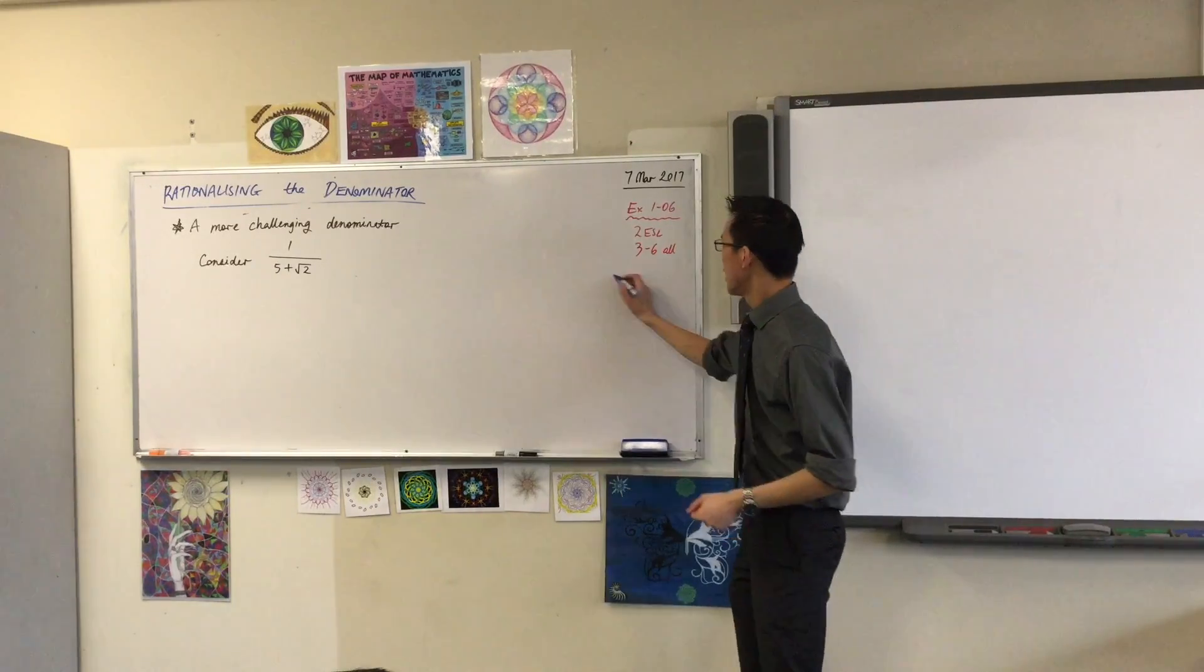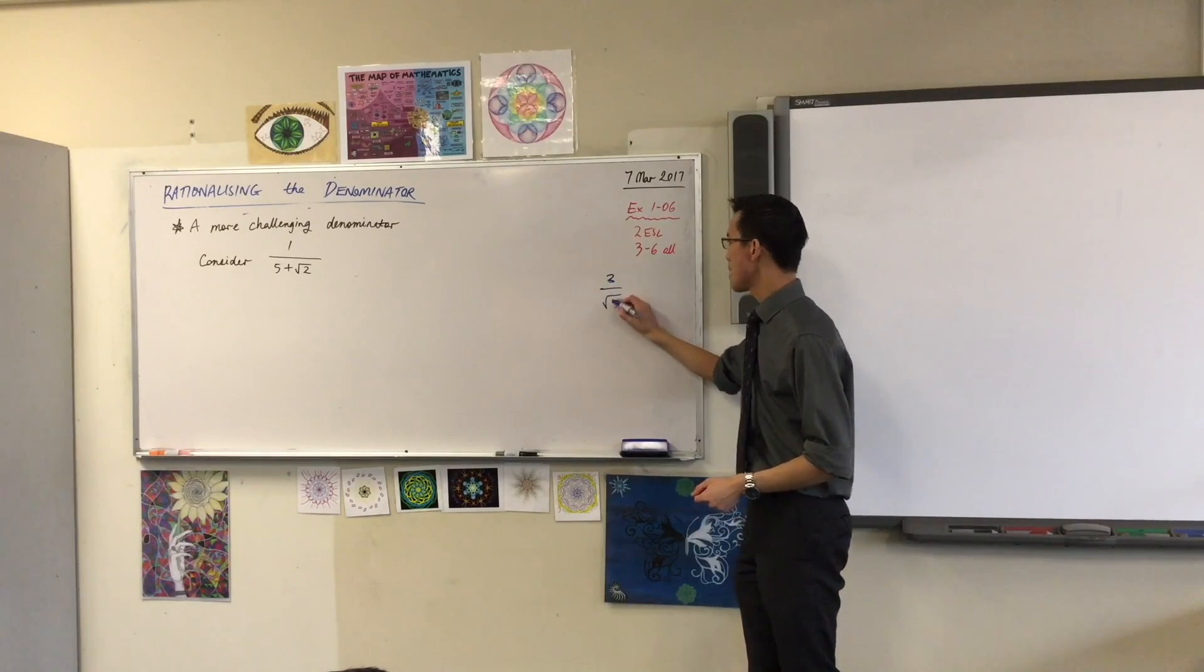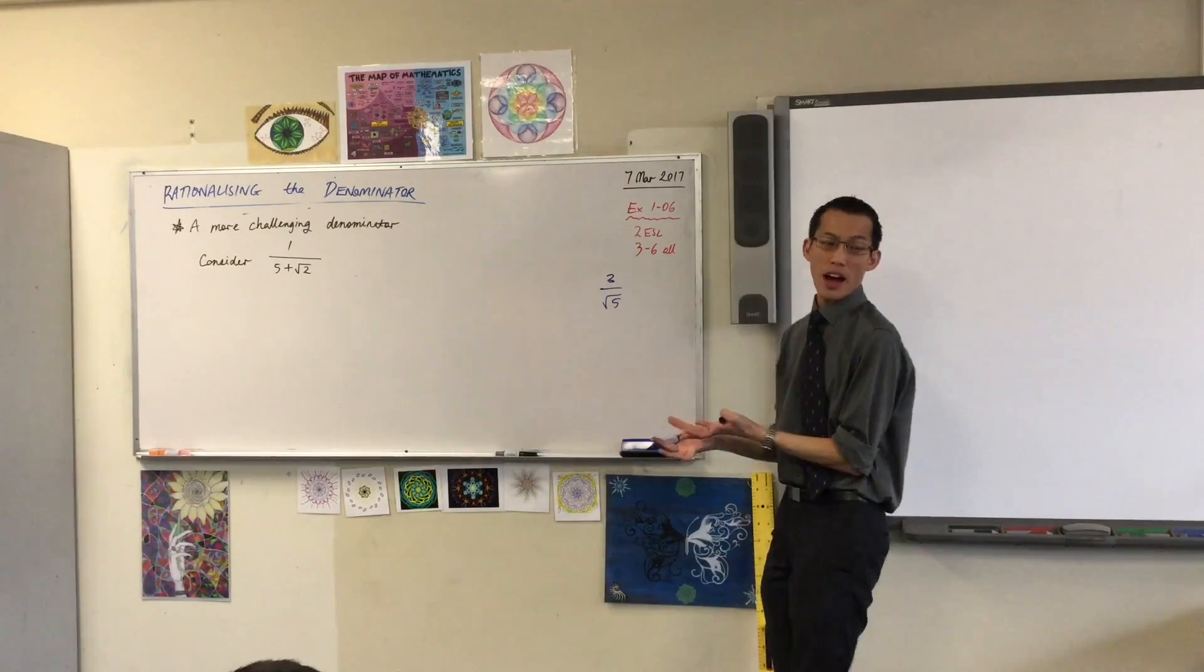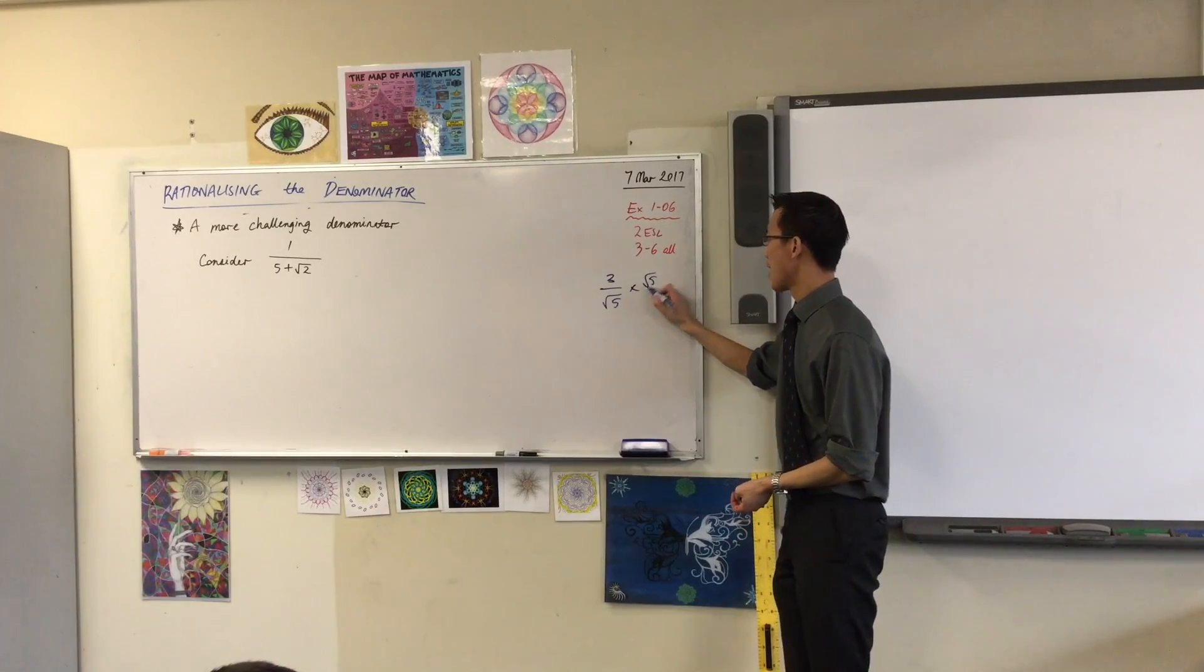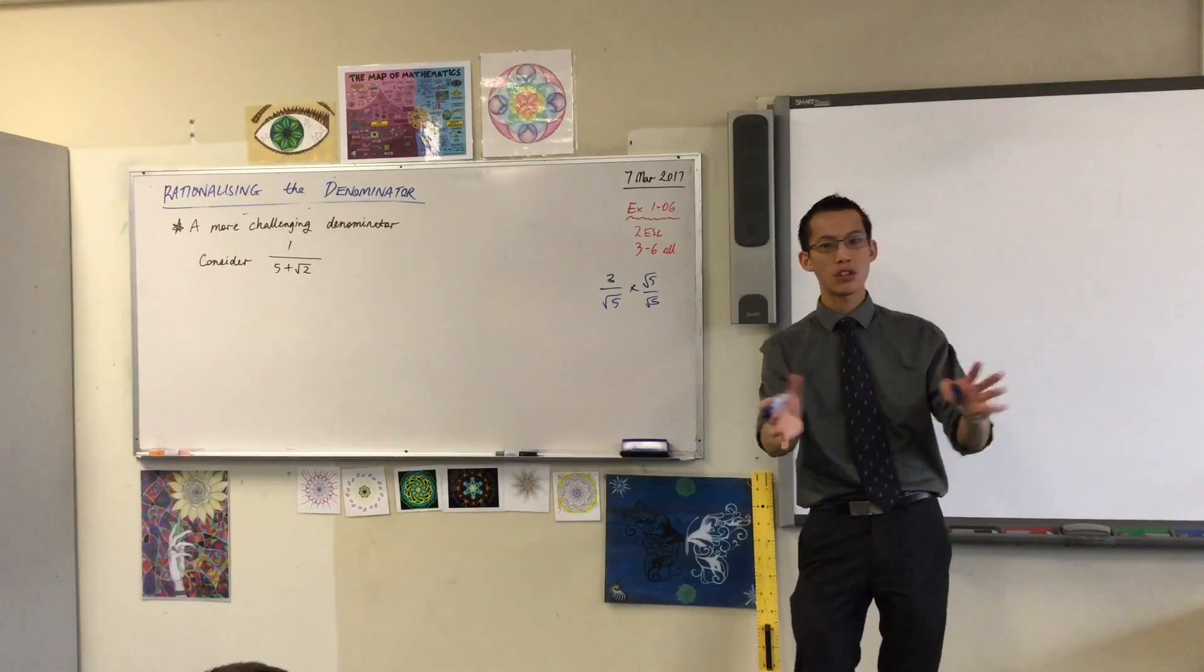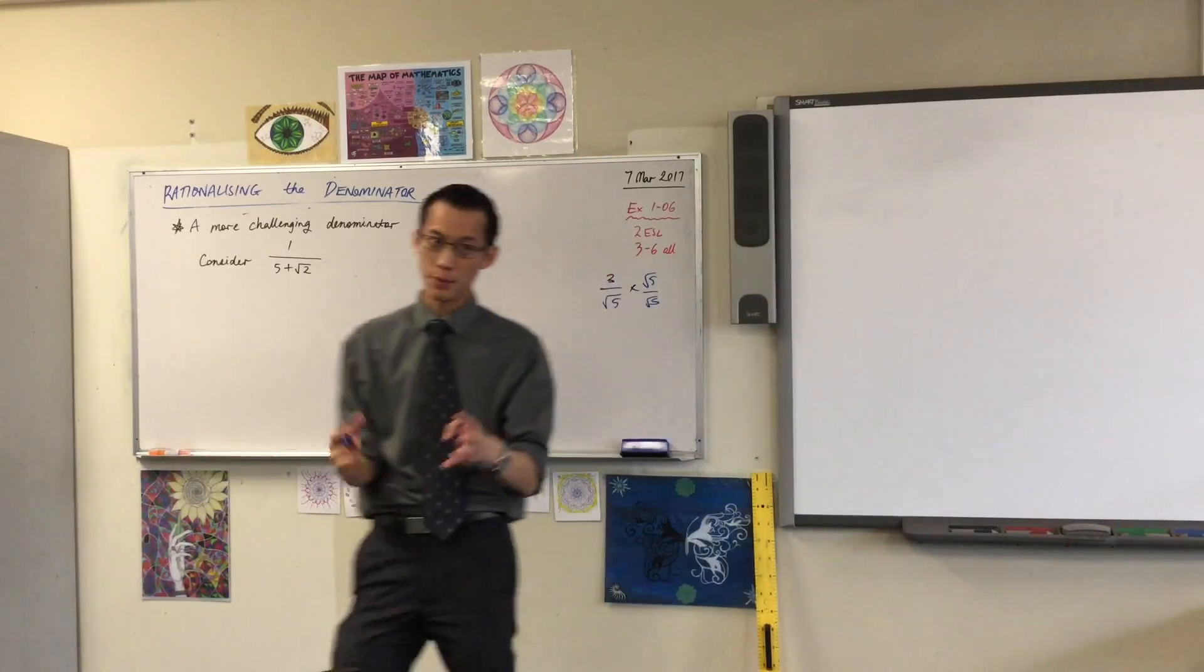Now so far if you saw something like this you'd say there's a root 5. The root 5 is the problem so I'm just going to multiply by root 5 over root 5 and it all just comes out in the wash and you've been doing that successfully for the last little bit.